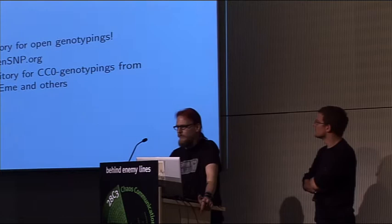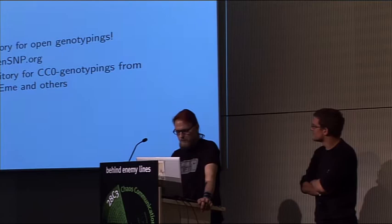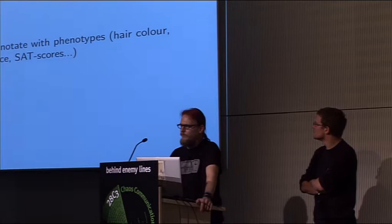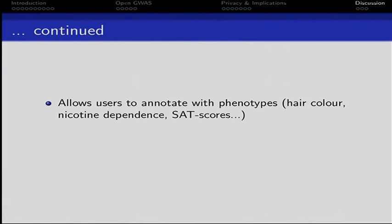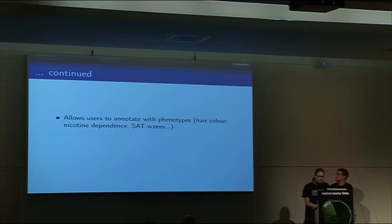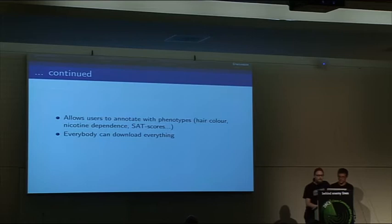It allows users to annotate phenotypes and it's completely crowdsourced — we don't make suggestions about what you should enter or not. People can go there and say 'I would like to know your phenotypic information about SAT scores.' People are already entering their test results from high school, nicotine dependence, hair colour, and disease risks or family cancer history. Everybody can download everything — the only thing kept private is email addresses and passwords.